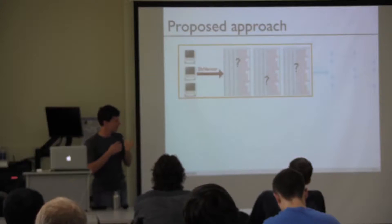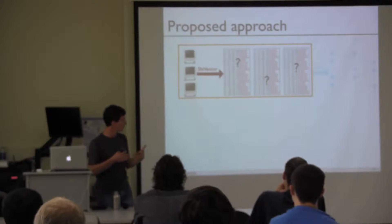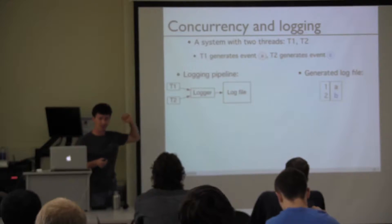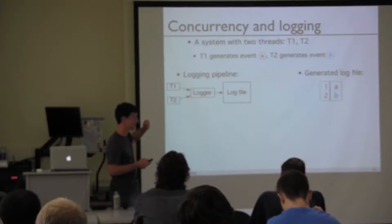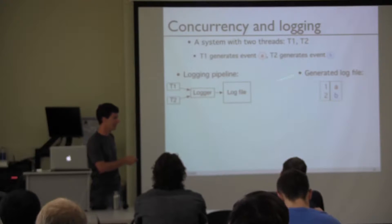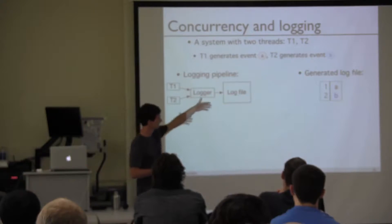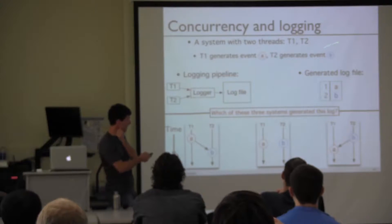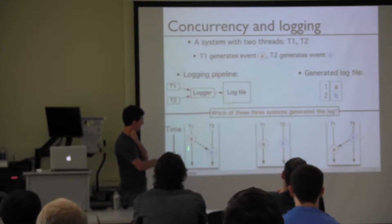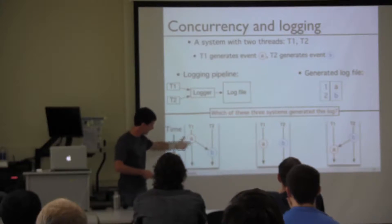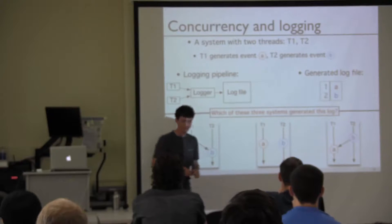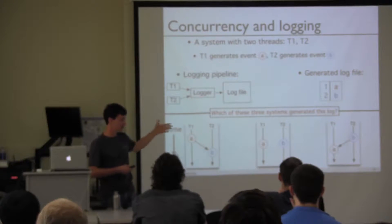I'll go into fairly close detail to explain the vector clock mechanism. One way to motivate vector clocks is to consider a hypothetical example: assume you have a multi-threaded system with two threads. T1 generates event A, T2 generates event B, and these threads log these events through some logger. The events are serialized, and your resulting log has event A on line 1 and event B on line 2. The question is: now that you see this log, which world are you in? Did A happen before B? Did A happen concurrently with B? Or did B precede A?